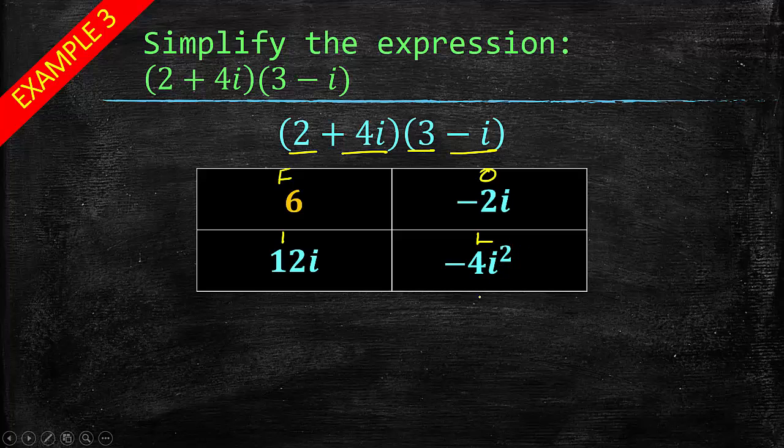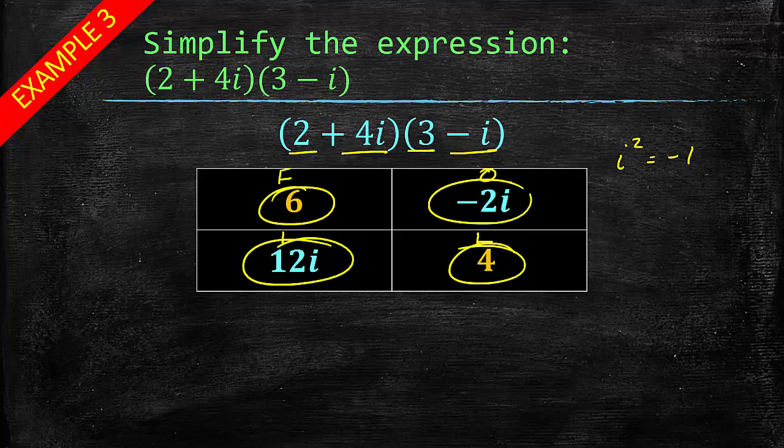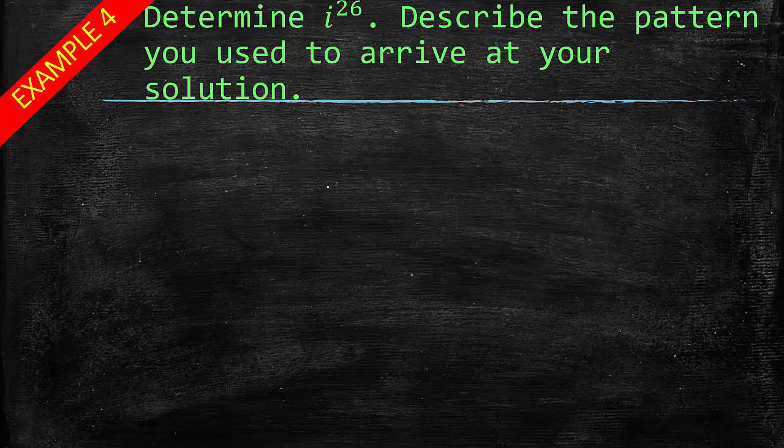So that i squared is going to become negative 1, remember? Because i squared equals negative 1. So now we have negative 4 times negative 1, because remember it was negative 4i, which means negative 4 times i. So negative 4 times negative 1 is 4. We add our constants, so 6 plus 4. We add our imaginary numbers, 12i minus 2i, and we get 10 plus 10i.